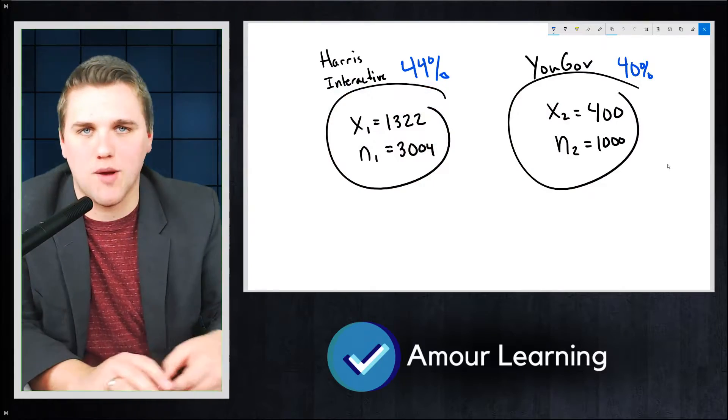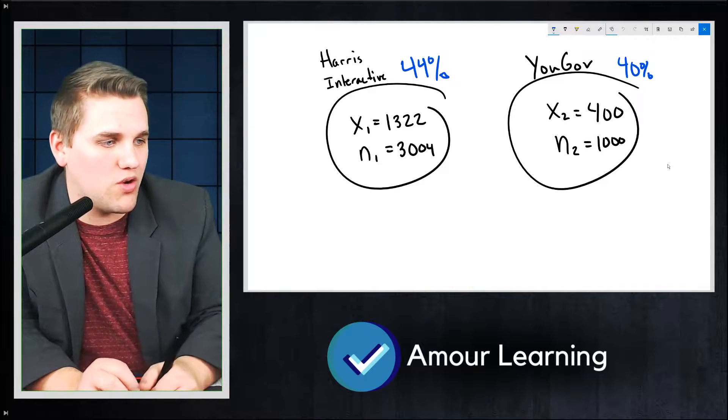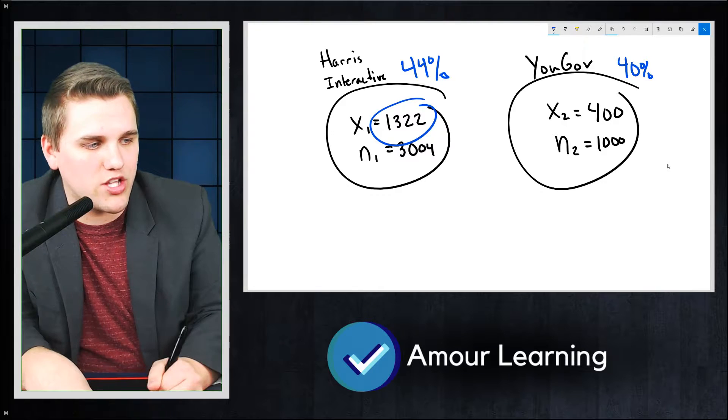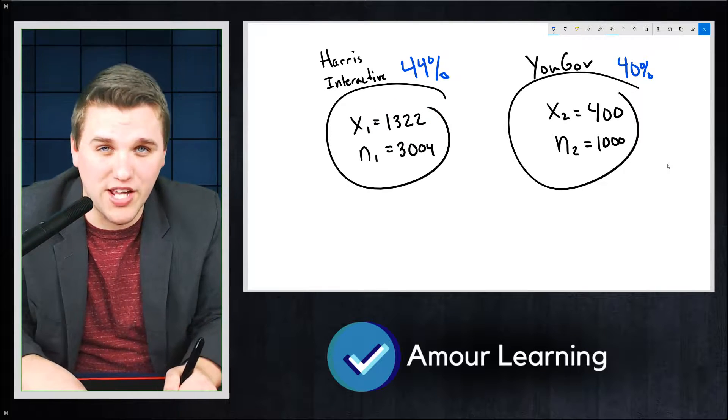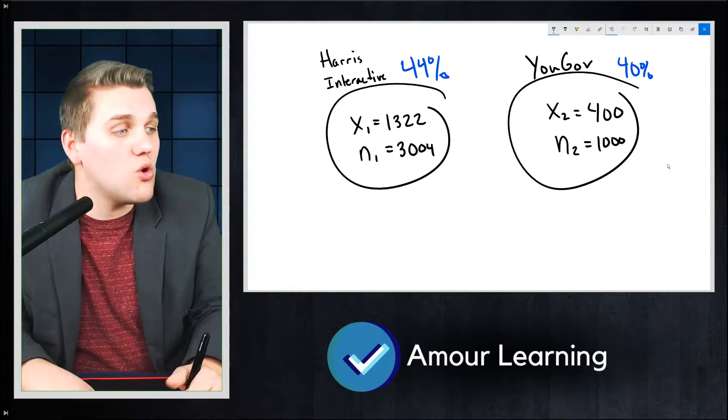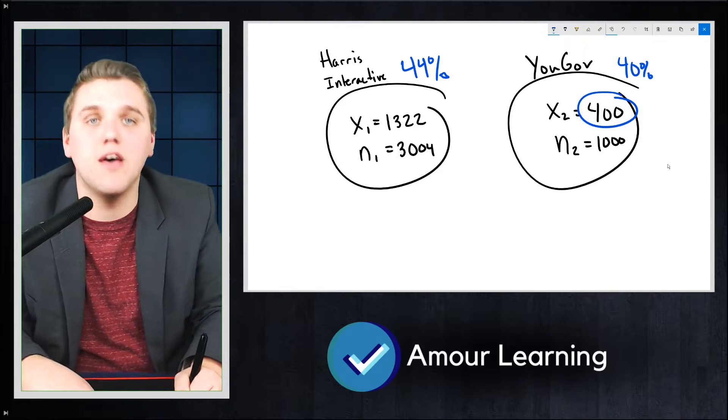So I actually set up some data for you guys that I want to show you. This is true polls, actual polls, about Trump's approval rating. Harris Interactive interviewed 3,004 people and found that 1,322 of them supported Donald Trump. That means 44% of their sample support Donald Trump, whereas YouGov sampled only 1,000 people and found that 400 of them support Donald Trump, which is 40%.